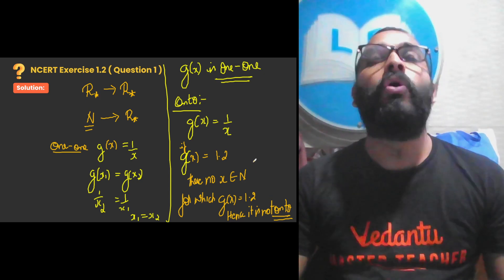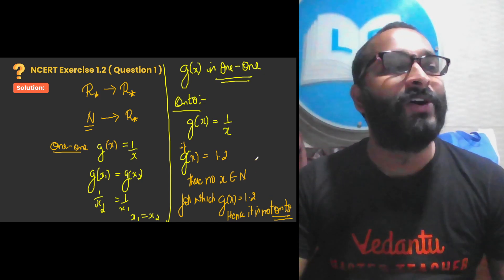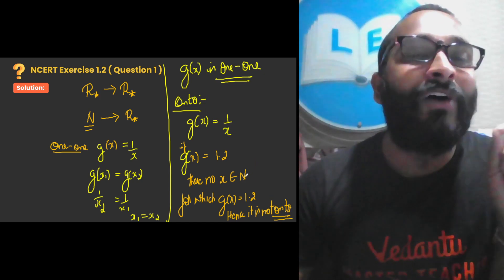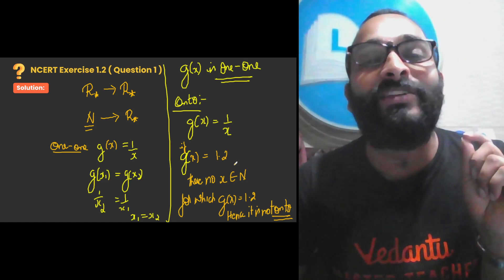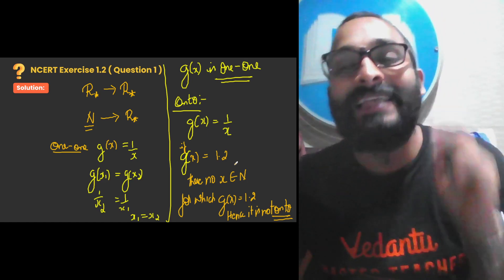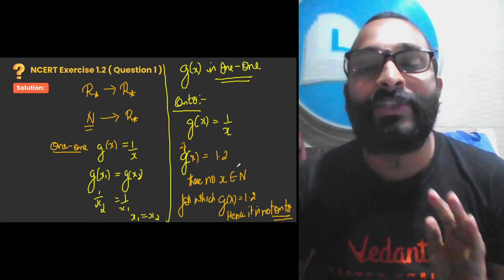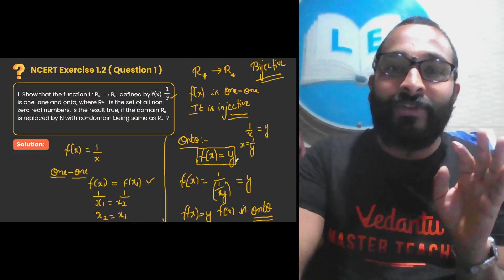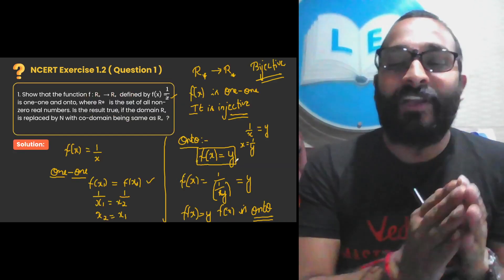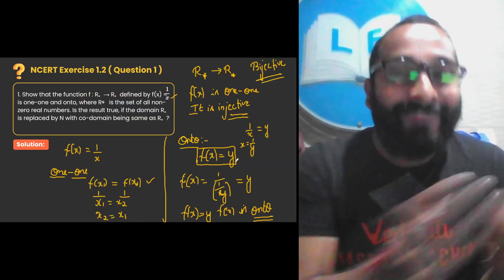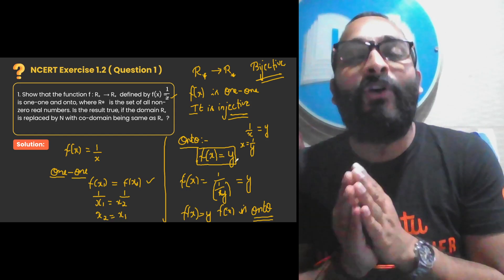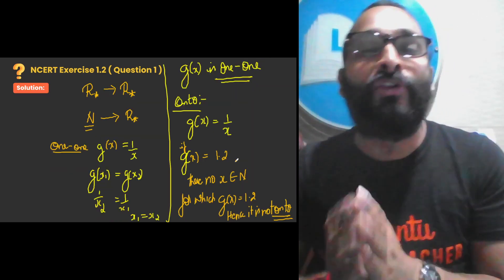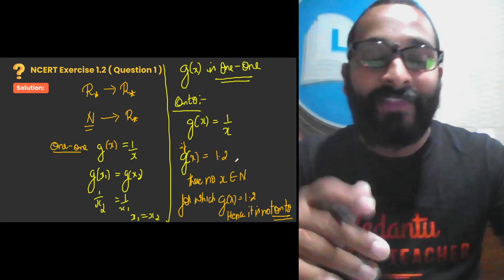So we have solved the first question of the NCERT Chapter on Relations and Functions, Exercise 1.2. We proved f(x) = 1/x on non-zero reals is bijective, and g(x) = 1/x from ℕ to R* is one-one but not onto. Please like, share, and subscribe, and share it with your friends so they can also solve these NCERT questions and score more in their examinations.